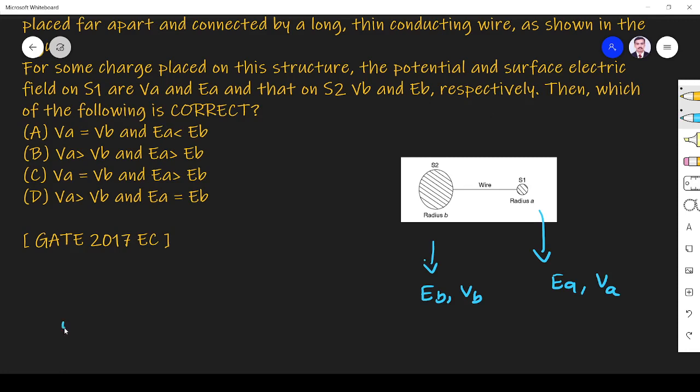We know that when two conducting spheres of equal charge, they kept equal charge right, so some charge placed and two conducting spheres of equal charge.